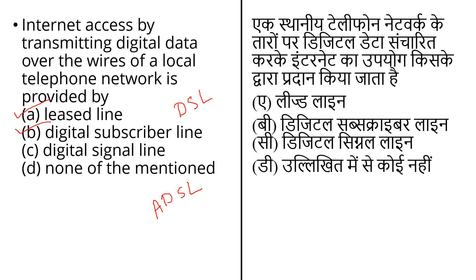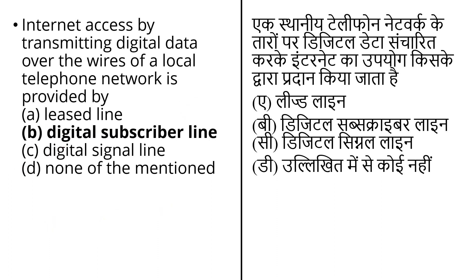The most commonly installed DSL technology is used for internet access. The third option is digital signal line, which is used to transmit and receive digital signals using a specific communication link. It is clear that DSL is a method used to access data by transmitting digital data using the wire of the local telephone network. The correct answer is option B: Digital Subscriber Line.